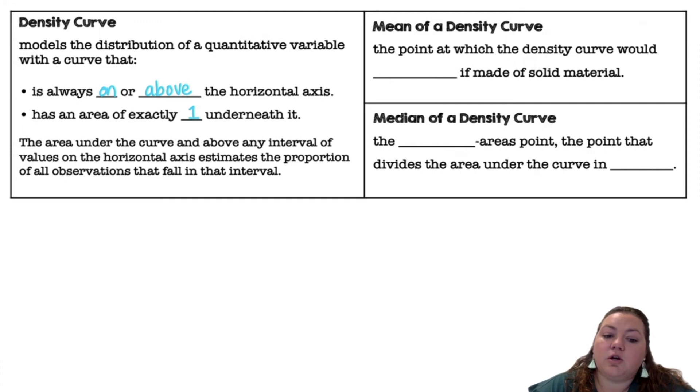The area under the curve and above any interval of values on the horizontal axis estimates the proportion of all observations that fall in that interval.